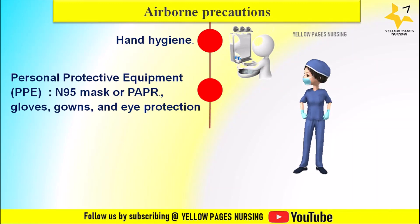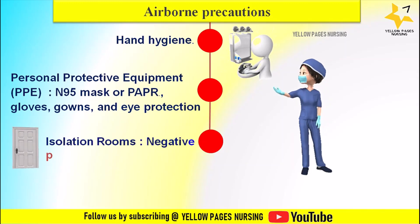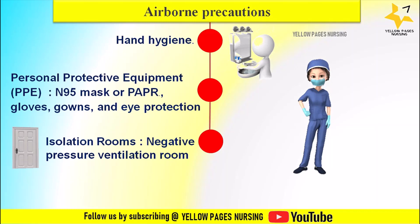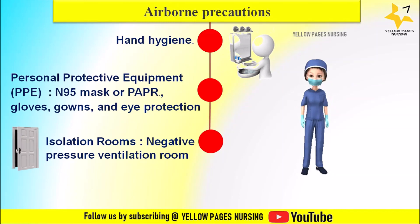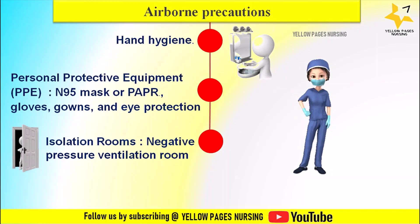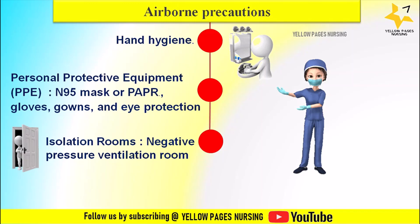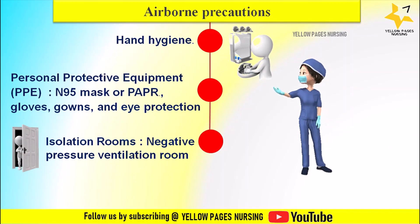Another key measure is isolation rooms. Patients requiring airborne precautions should be placed in a negative pressure ventilation room, which helps contain and prevent the escape of airborne particles. The air inside the room is continuously filtered and exhausted to the outside, reducing the risk of transmission to others. These rooms should always be kept closed.